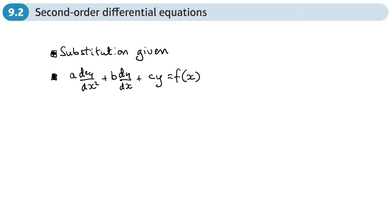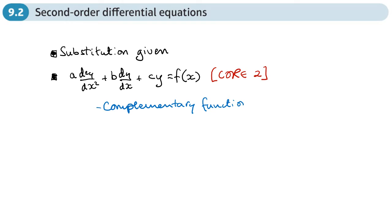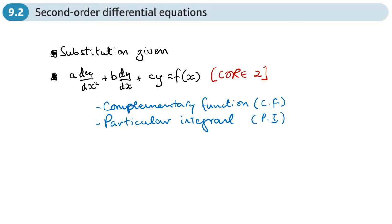This is the form that we'll have, and we can solve these — you will have learned how to do it in Year 2, and I'll put a link in the description for that. To do these we need to find the complementary function and also find the particular integral. The general solution is the complementary function plus the particular integral, and it will have arbitrary constants in it.